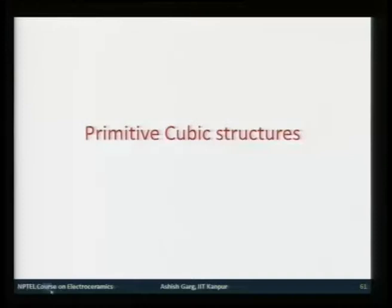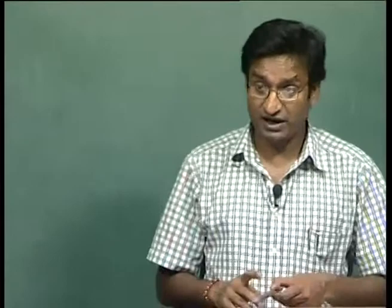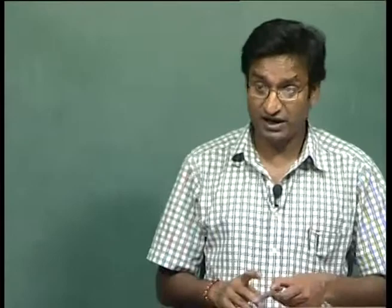The perovskite structure is very important because many engineering materials follow it, especially ferroelectric and manganite materials. The formula for compounds with this structure is ABO3, where A and B are two cations and oxygen is the anion. The most common examples are barium titanate, strontium titanate, and lead titanate. Based on Pauling's rules and radius ratios, one predicts 12-fold coordination of the A ion and 6-fold coordination of the B ion.